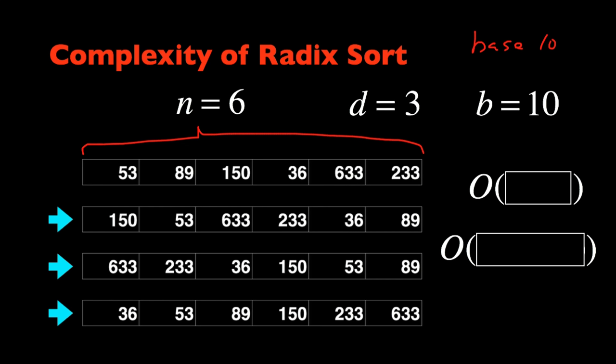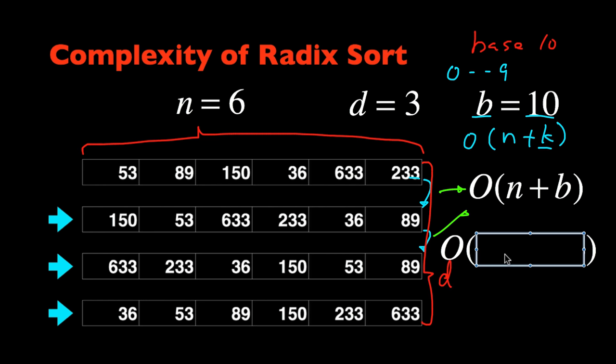Now remember that in each step of radix sort, we sort the array using counting sort, using one of the digits as the key. And the time complexity for counting sort is big O of n plus k, where k is the range of keys that we have for each number. And the range of keys in this particular case is 10, or b, because the key ranges from 0 through 9, and it's always an integer. And so each of these steps takes big O of n plus b in time. And we need to repeat this procedure three times in this particular case, or d times in general. So the time complexity for the whole algorithm of radix sort will be big O of d times n plus b.